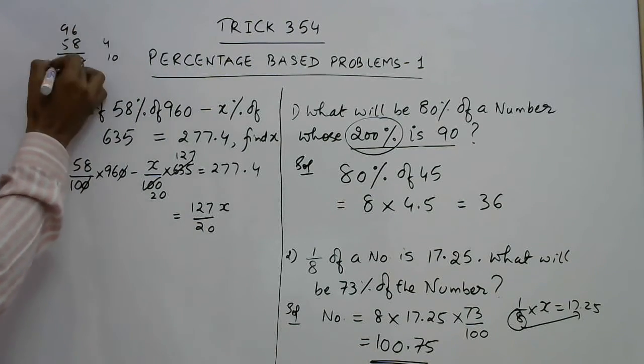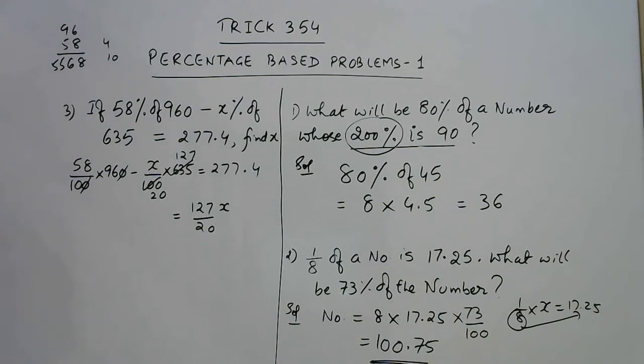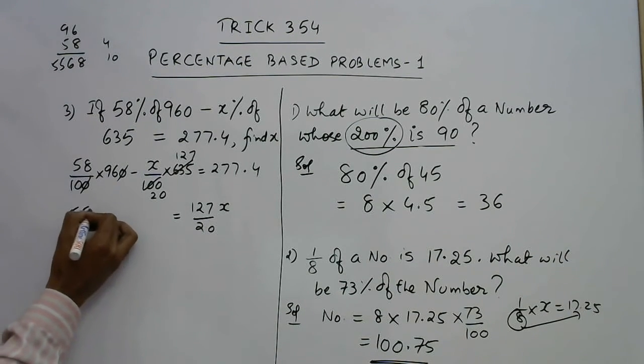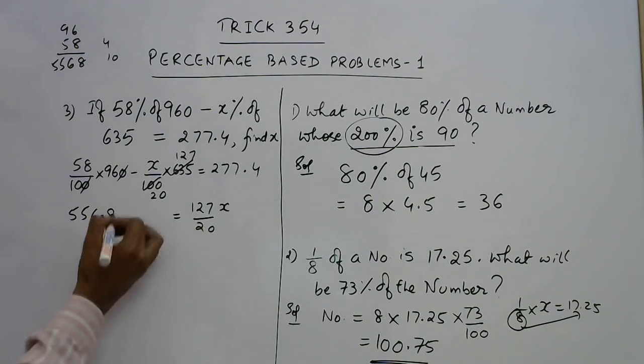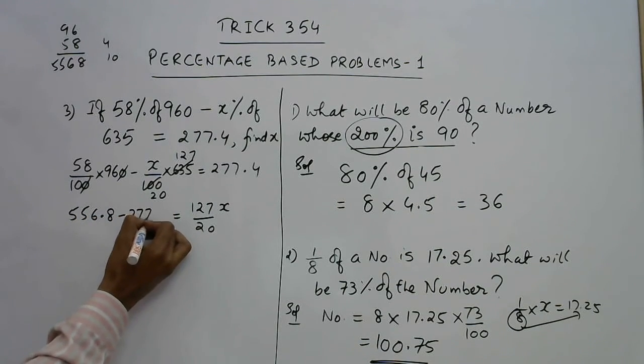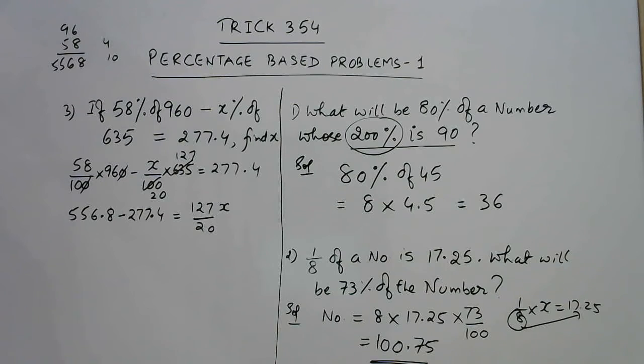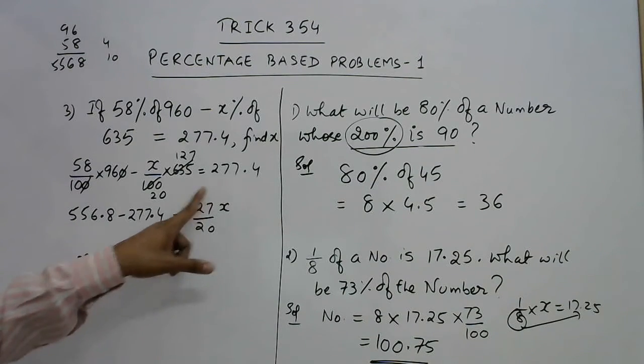So 556.8, and this 277.4 will get subtracted from here. So the value of x will come out after getting this difference, multiplying it by 20, and dividing it by 127.